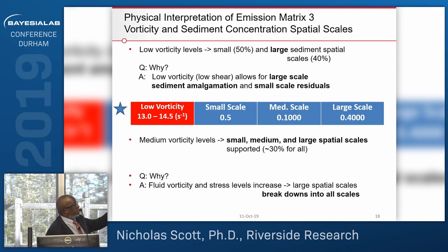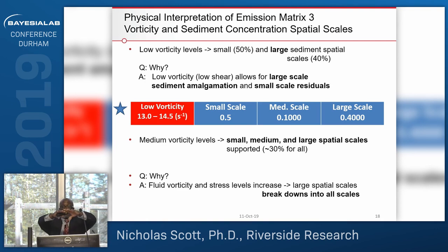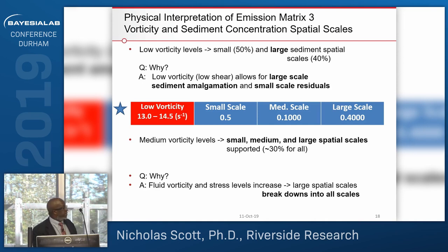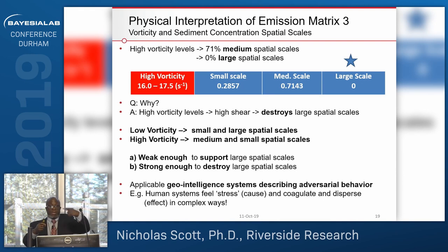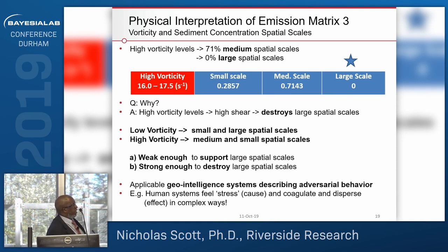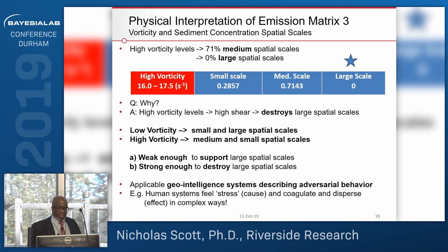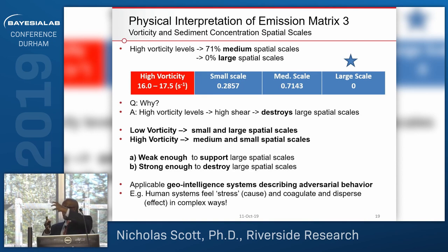At medium vorticity levels, small, medium, and large spatial scales are all present at roughly 30% each — the stress is shredding everything apart. At high vorticity levels — 71% at medium spatial scales, zero at large spatial scales — high shear and high vorticity destroy large spatial scales. So the takeaway is: low vorticity supports small and large spatial scales; high vorticity leaves only medium and small spatial scales. Vorticity can shred particles when high, and allow amalgamation when low, and this is applicable to geo-intelligence systems describing adversarial behavior.